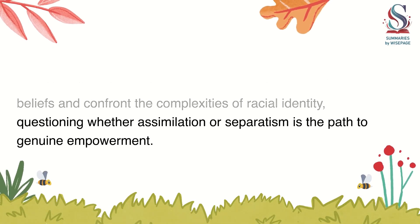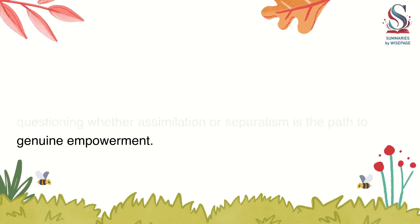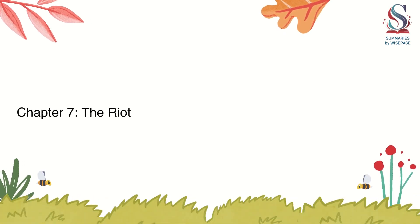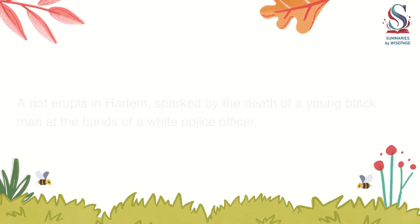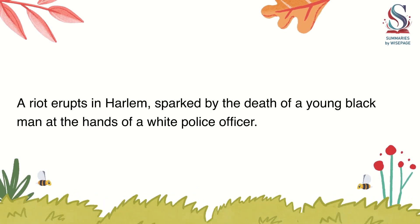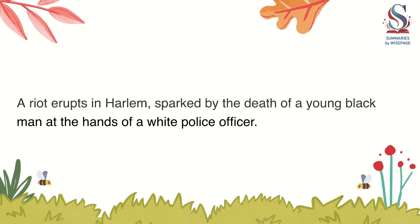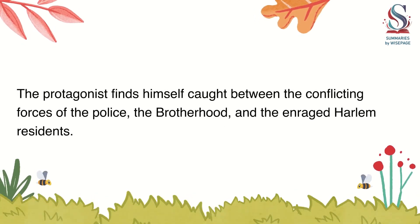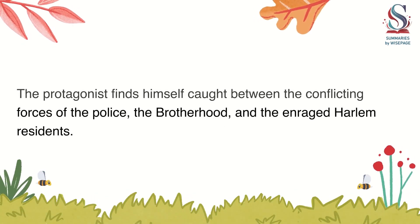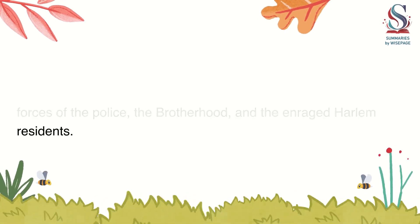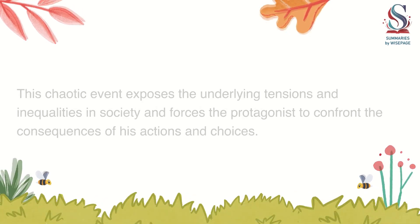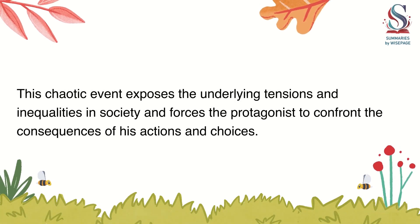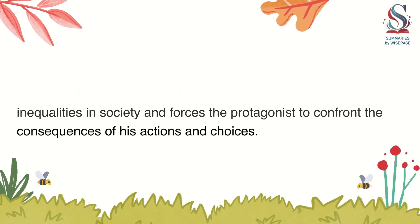Chapter 7: The Riot. Questioning whether assimilation or separatism is the path to genuine empowerment, a riot erupts in Harlem, sparked by the death of a young black man at the hands of a white police officer. The protagonist finds himself caught between the conflicting forces of the police, the Brotherhood, and the enraged Harlem residents. This chaotic event exposes the underlying tensions and inequalities in society and forces the protagonist to confront the consequences of his actions and choices.